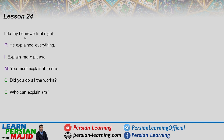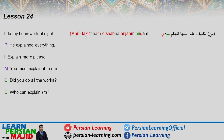Now ANJAM DADAN, meaning 'to do'. 'I do my homework at night' — TAKLIFAMO SHABA ANJAM MIDAM. Note that TAKLIF means 'homework' and in Persian we normally make it plural: TAKLIFHA. The object marker is then added: TAKLIFHAMO or TAKLIFHAMARO. SHABA means 'at night'.